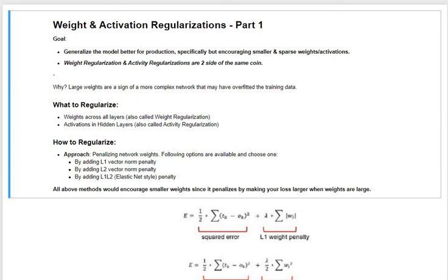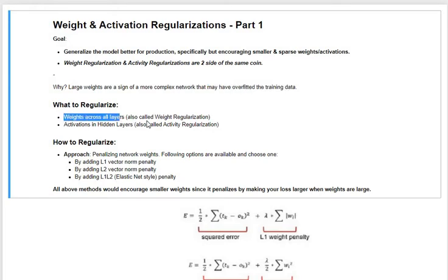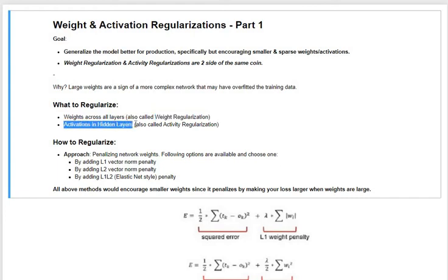In this video, we'll learn about weight and activity regularizations for neural networks. We'll also learn how weight regularization and activity regularization are two sides of the same coin. We want to regularize so that we are not overfitting the model. In the non-deep neural network space, we used to typically regularize only the weights, but in neural networks, we have the option to regularize both the weights across all layers — also called weight regularization — and the activations in the hidden layers, which is called activity regularization.